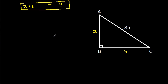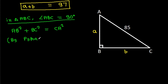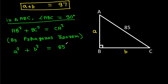Now, angle ABC is 90 degrees, so by Pythagoras theorem, AB squared plus BC squared equals CA squared. With AB as A and BC as B, we get A squared plus B squared equals 85 squared.